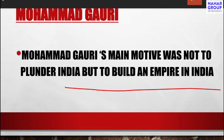Mohammad Gauri fought Prithviraj Chauhan twice. The second time, Prithviraj Chauhan was defeated and killed at the Battle of Tarain in AD 1192. With this victory, Mohammad Gauri became the master of the Delhi area and eastern Rajasthan, and his rule extended over the Ganga-Yamuna Doab, Bihar, and Bengal.